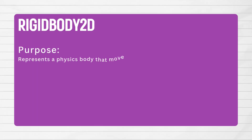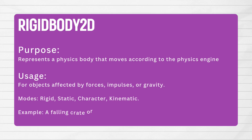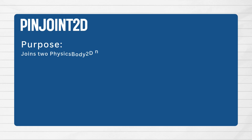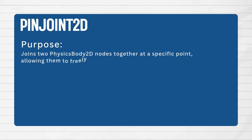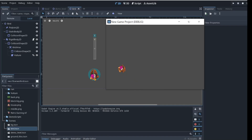The RigidBody2D node represents a physics body that moves according to the physics engine — used for objects affected by forces, impulses, or gravity. The PinJoint2D node joins two physics Body2D nodes together at a specific point, allowing them to freely rotate, and is typically used for creating constraints like hinges or fixed joints. An example is a pendulum connected to a chain link — or in my case, a bird flying in an arc.